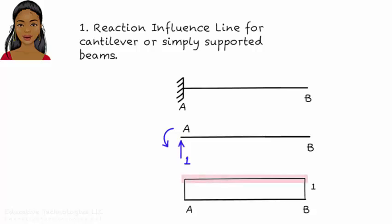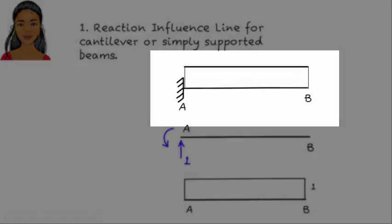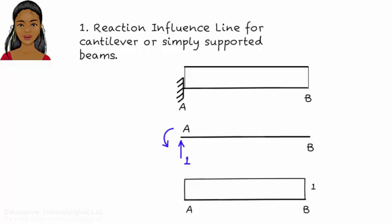As you can see, the diagram is a straight horizontal line, as if we have taken the beam and pushed it up by one unit at A. This idea of pushing the beam up by one unit at the support and drawing the shape that results is a convenient way for drawing reaction influence lines qualitatively.